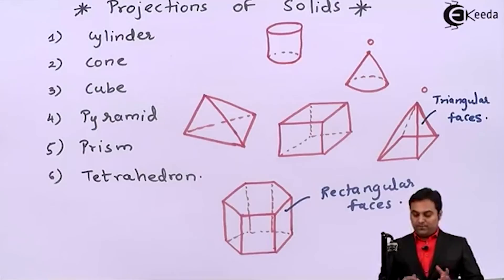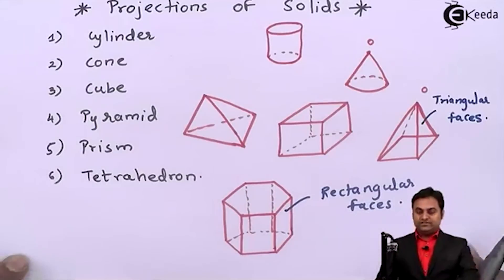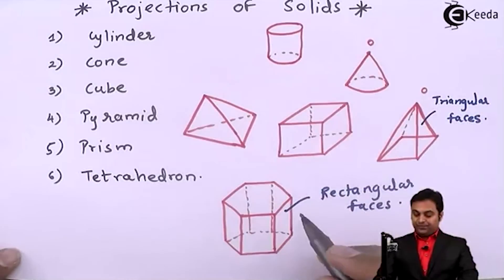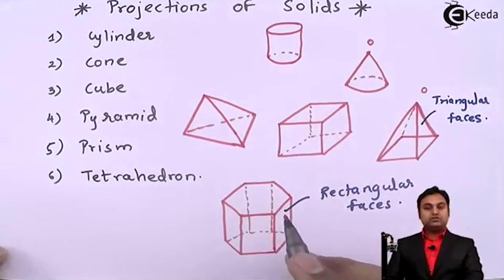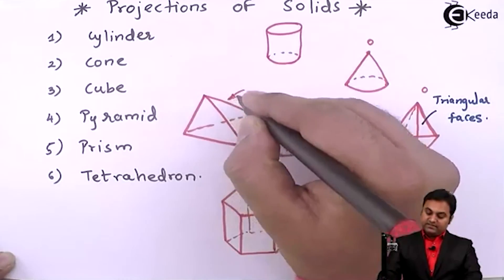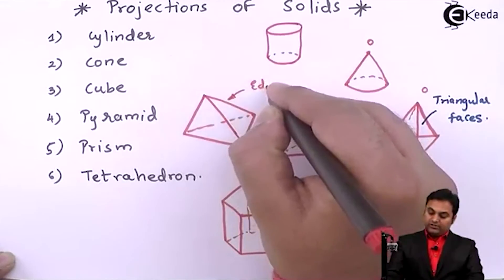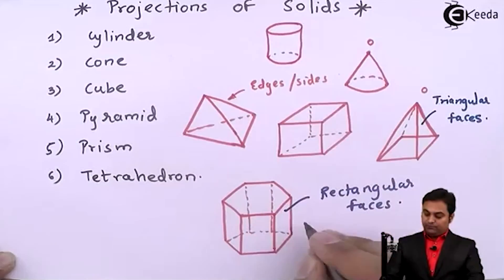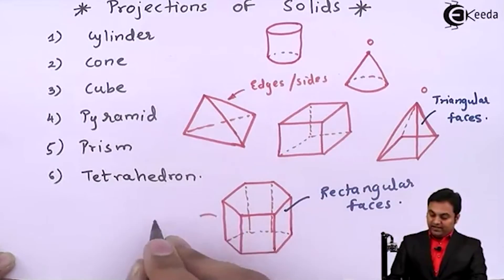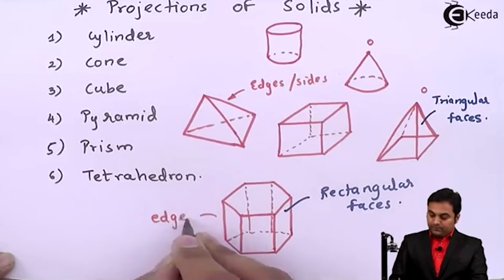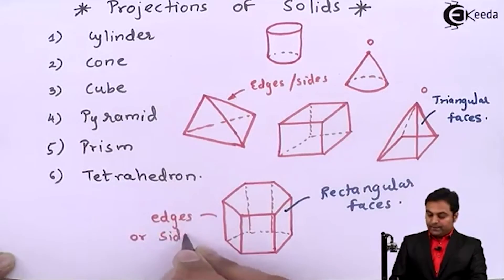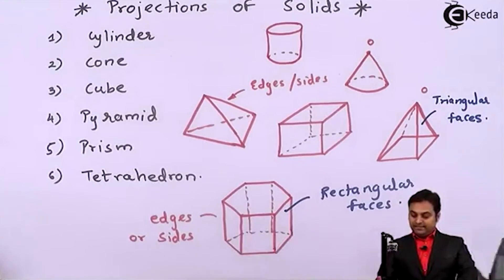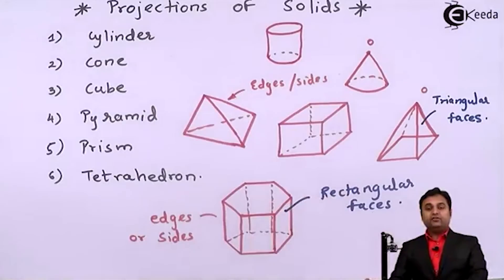So that is a tetrahedron. Next in case of solids as I have defined the vertexes for cone and for prism. In case of the other solids we have these edges or they are also called as sides. Like even in case of prism here we have edges or sides.